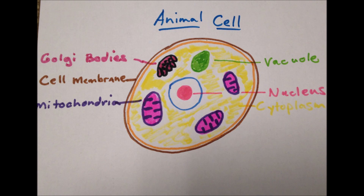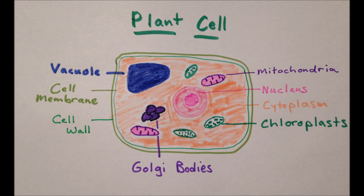What are some parts of a plant cell? Nucleus, cytoplasm, vacuole, mitochondria, cell membrane, cell wall, chloroplasts, and golgi bodies.